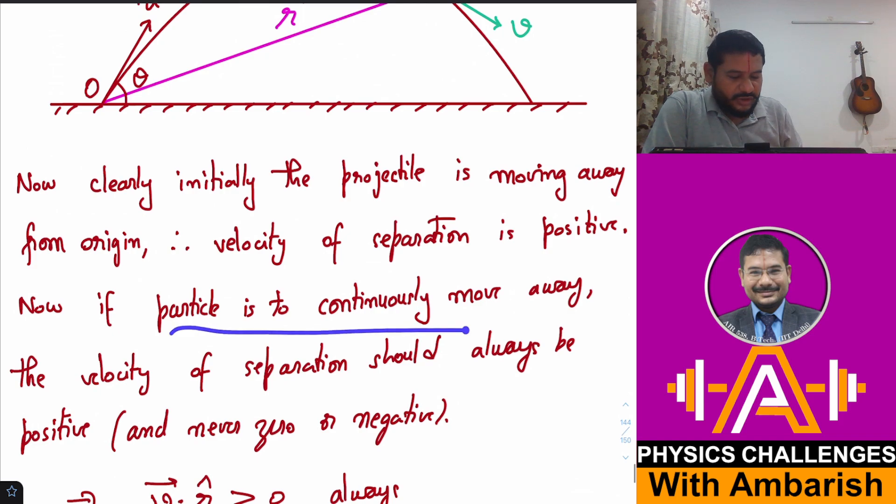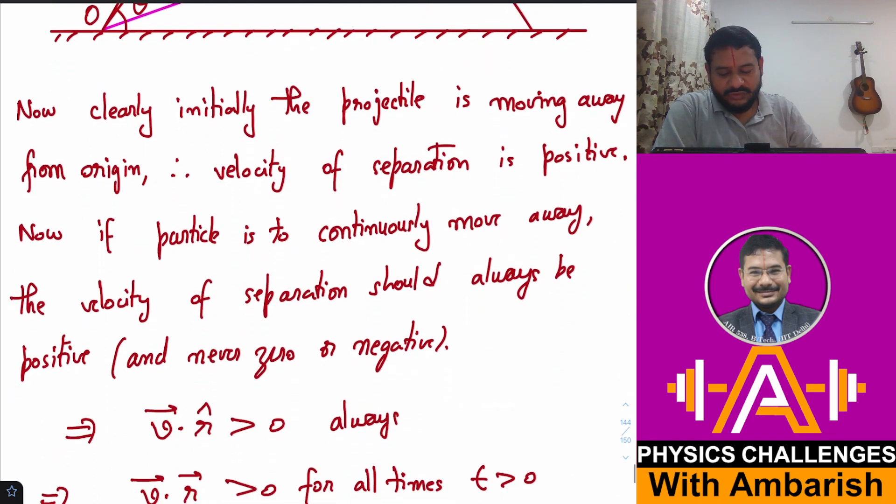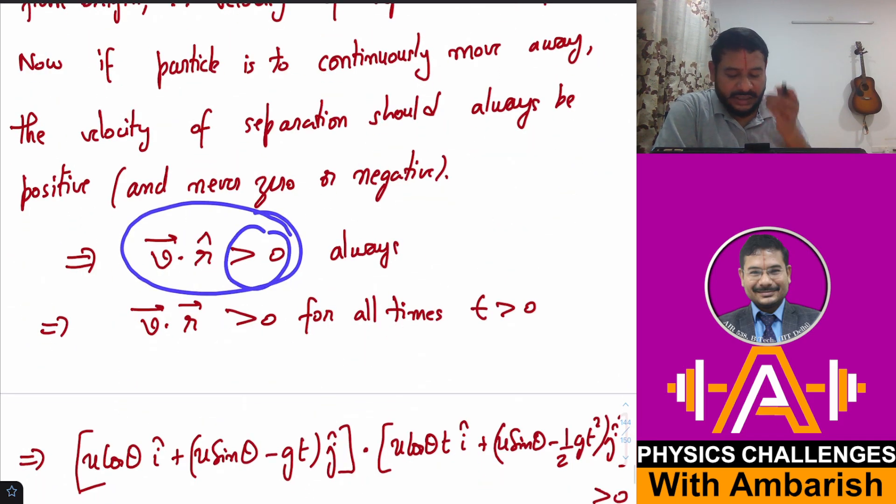Therefore velocity of separation is positive. Now if the particle is to continuously move away, the velocity of separation should always be positive and never be zero or negative. Negative means the distance has started decreasing, and zero means some kind of maxima or minima has occurred. So we can say that for t > 0, v⃗·r̂ should always be greater than zero.